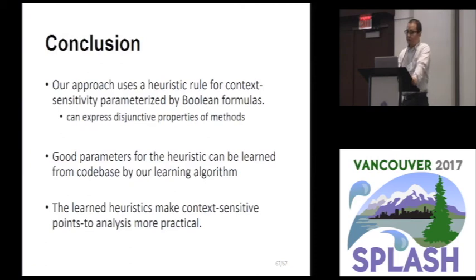Now, conclusion. I would like to summarize this talk. In this talk, we introduced a heuristic rule for context sensitivity, which is parameterized by boolean formulas. And we showed that good parameters for the heuristic can be learned from a carefully designed learning algorithm. We implemented our approach on top of the Doop Java point-to-analysis framework, and demonstrated that the learned heuristic can make context-sensitive analysis precise and scalable. Thank you.